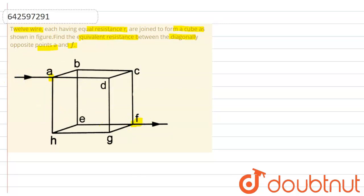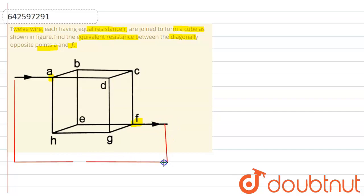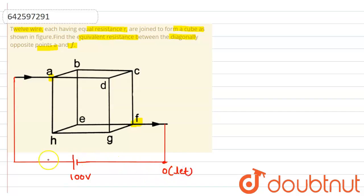We have to find the equivalent resistance between A and F. So first of all, I am going to connect the points A and F by a battery of 100 volts to solve this problem by an easier method. Consider I have connected the ends of the wire, and this point is connected over here. The reference potential over the negative terminal is 0 volt, so the potential at the positive terminal will be 100 volt and the potential at node F will also be 0 volt because this is a simple connecting wire. The potential at A will also be 100 volt.